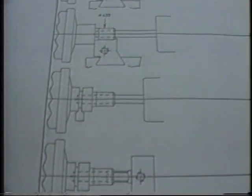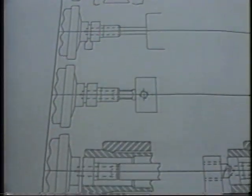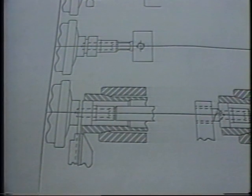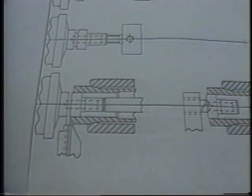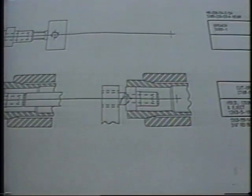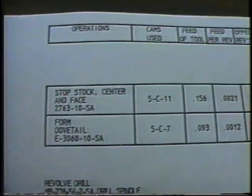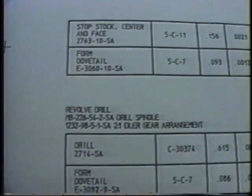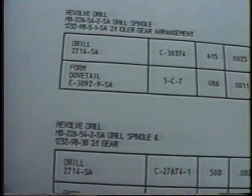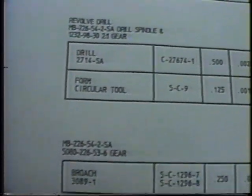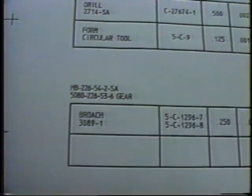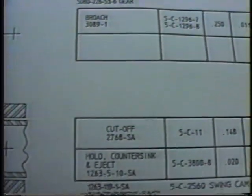Machining operations are illustrated by individual stations starting with the first position and progressing downward sequentially to the fifth position, followed by any backworking operation that may apply. To the direct right of each machining illustration are the operations listings for both crossworking and endworking tools. Endworking operations are contained in the top block and sideworking in the bottom.